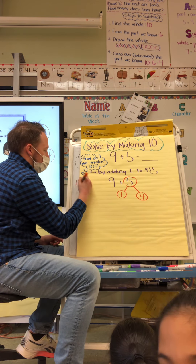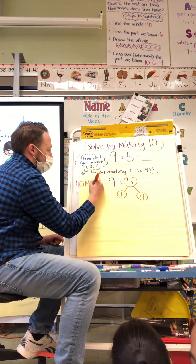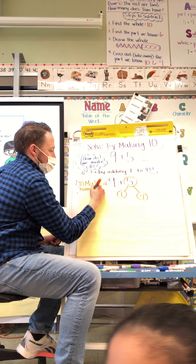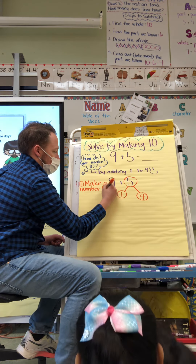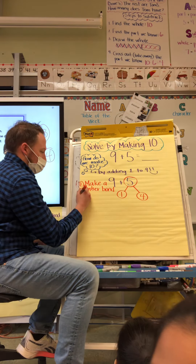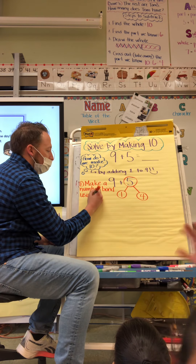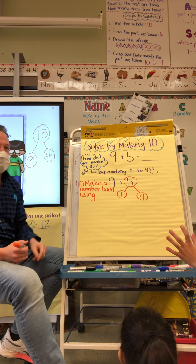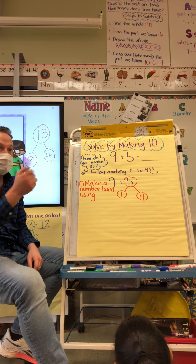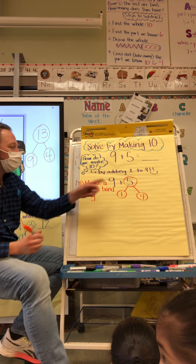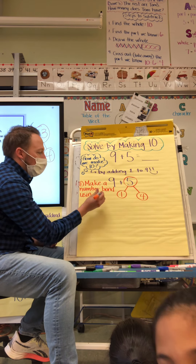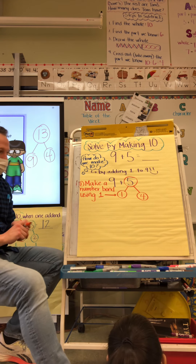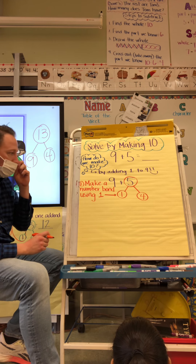You guys are being very helpful. So step one is going to be to make a number bond — but using what number? Not nine. One has to be in your number bond. One has to be in your number bond.